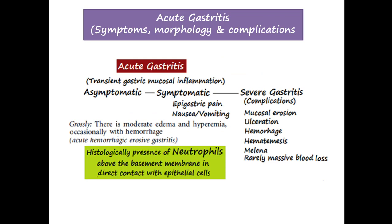In transient or mild acute gastritis, the patient may develop no symptoms. In moderate form, epigastric pain, nausea, and vomiting may occur. In severe form, complications arise: mucosal erosion occurs, the mucosa is sloughed off causing ulcer formation that can bleed. The patient may vomit blood as hematemesis, or blood present in food contents passes through the gastrointestinal tract producing black tarry stools — a condition known as melena.